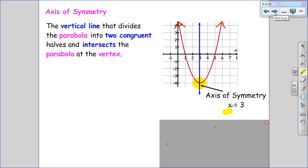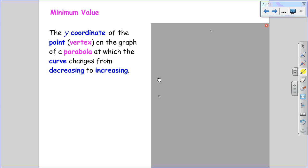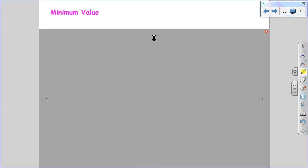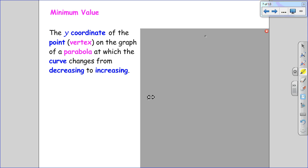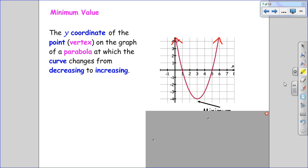And when we're graphing a quadratic function, it is not included as part of our graph. Minimum values are the y-coordinates of a point of the vertex, the y-coordinate of the vertex, so where the curve changes from decreasing to increasing.